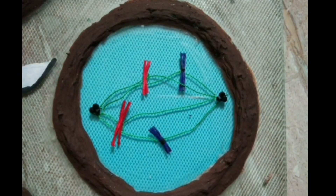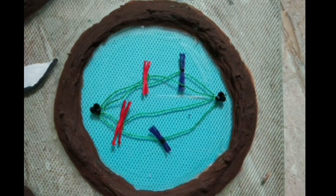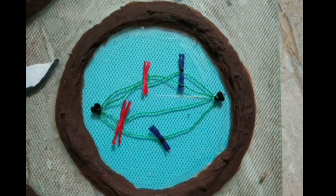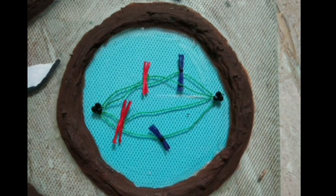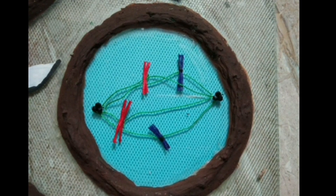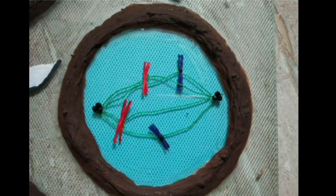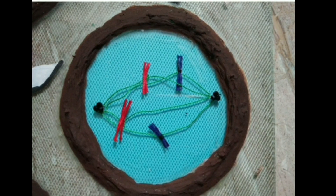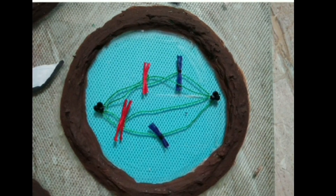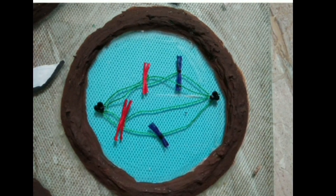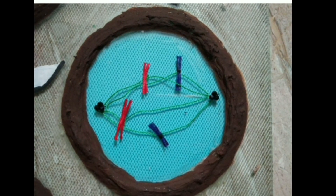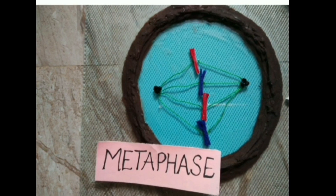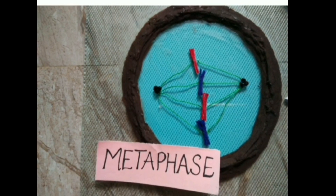Centrosomes, which had undergone duplication during interphase, begin to move towards opposite poles of the cell. At the end of prophase, the Golgi complex, endoplasmic reticulum, nucleolus, and nuclear envelope disappear. This complete disintegration marks the start of metaphase.